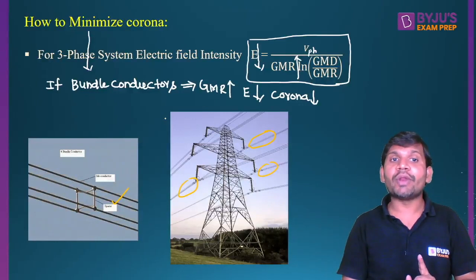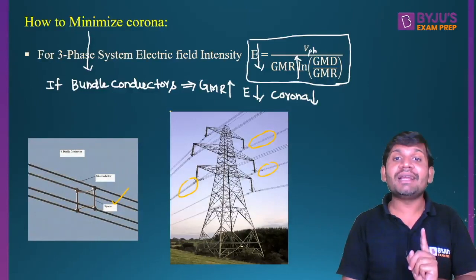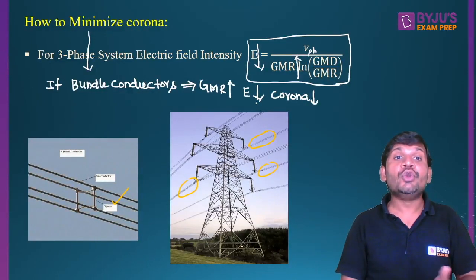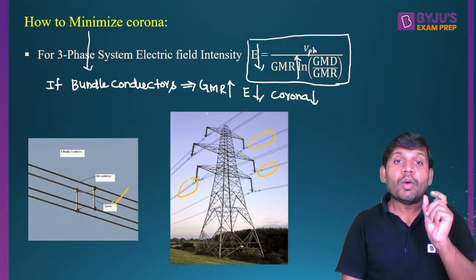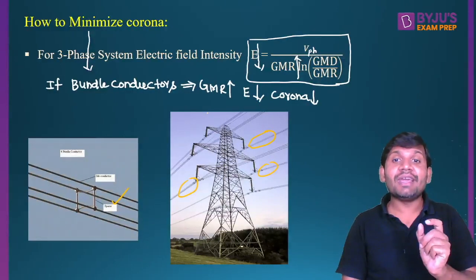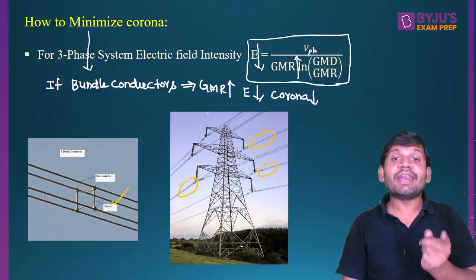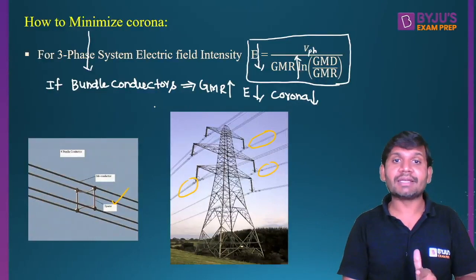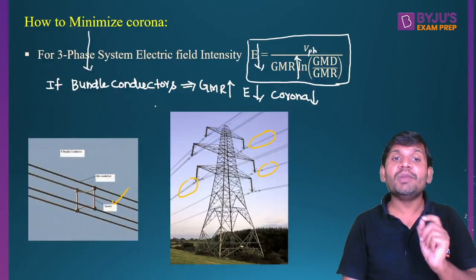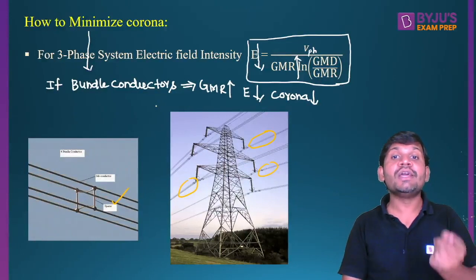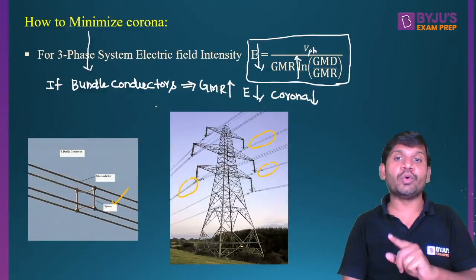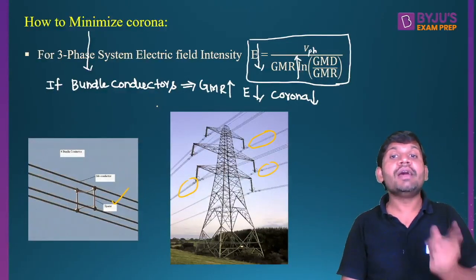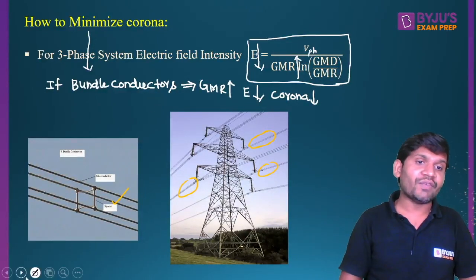One more point to remember: bundle conductors do not only reduce the corona effect. Due to corona, there is a problem that causes radio interference as well. That radio interference effect is also reduced by using bundle conductors. The main motive of using bundle conductors is to reduce the corona effect, but indirectly it reduces the radio interference effect also.